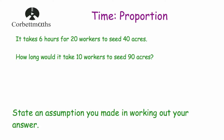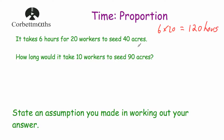Our next question says it takes 6 hours for 20 workers to seed 40 acres. How long would it take 10 workers to seed 90 acres? If there was just 1 worker, it would take 20 times longer. So if we take 6 and multiply it by 20, that's 120 hours for 1 worker to seed 40 acres.